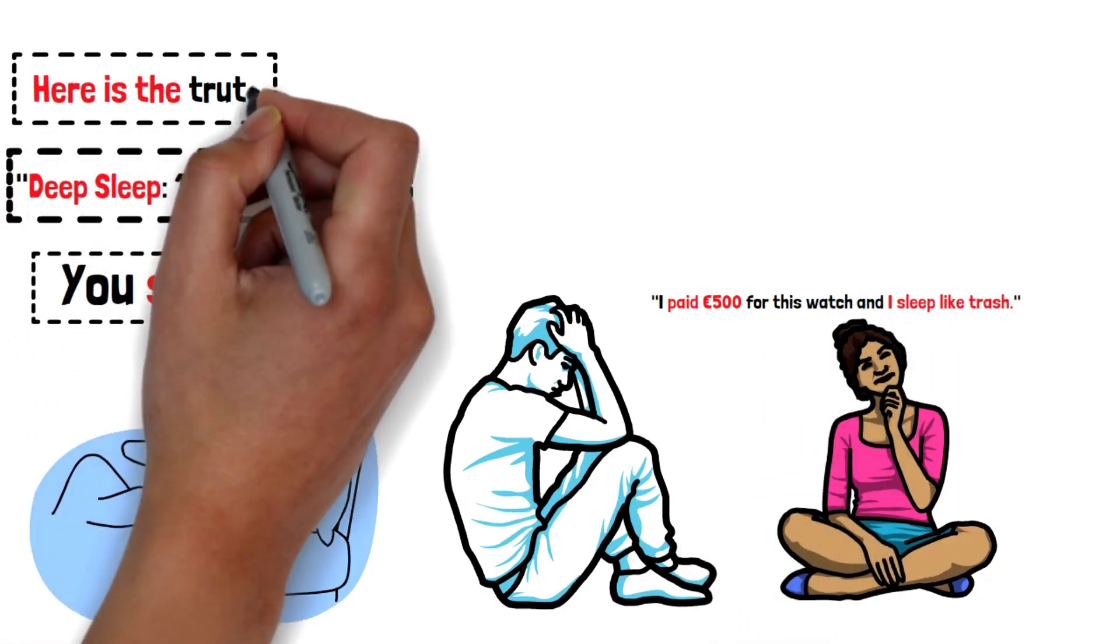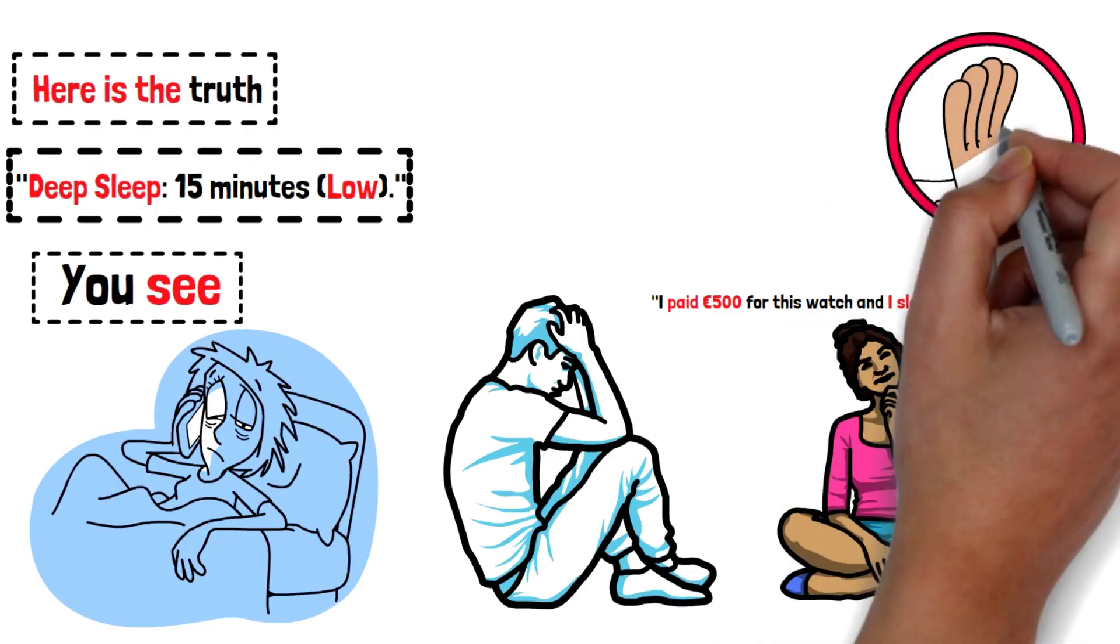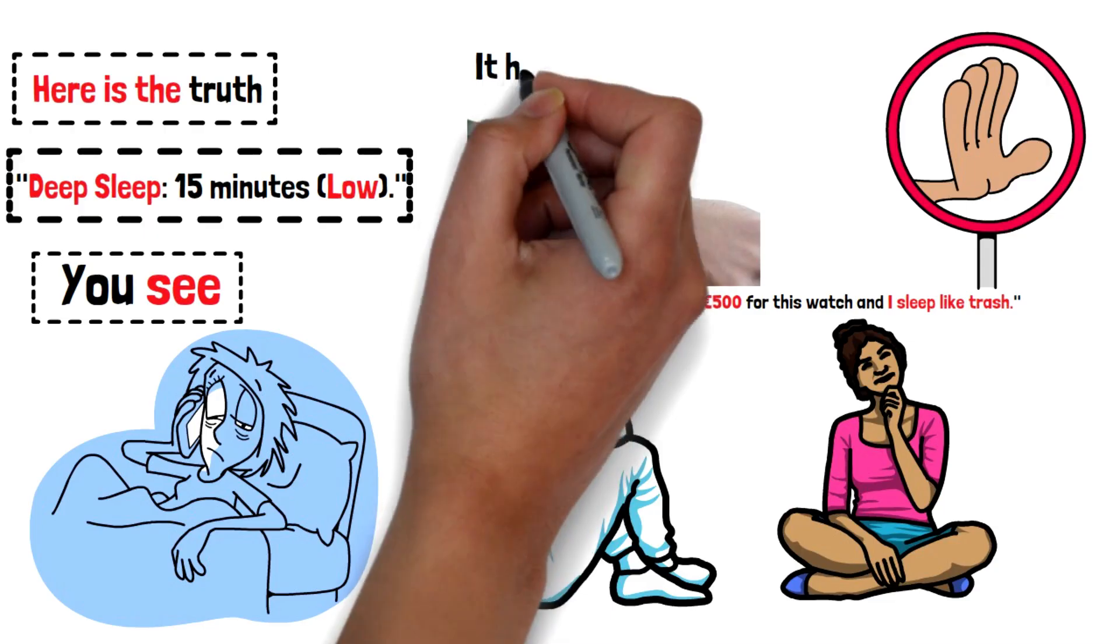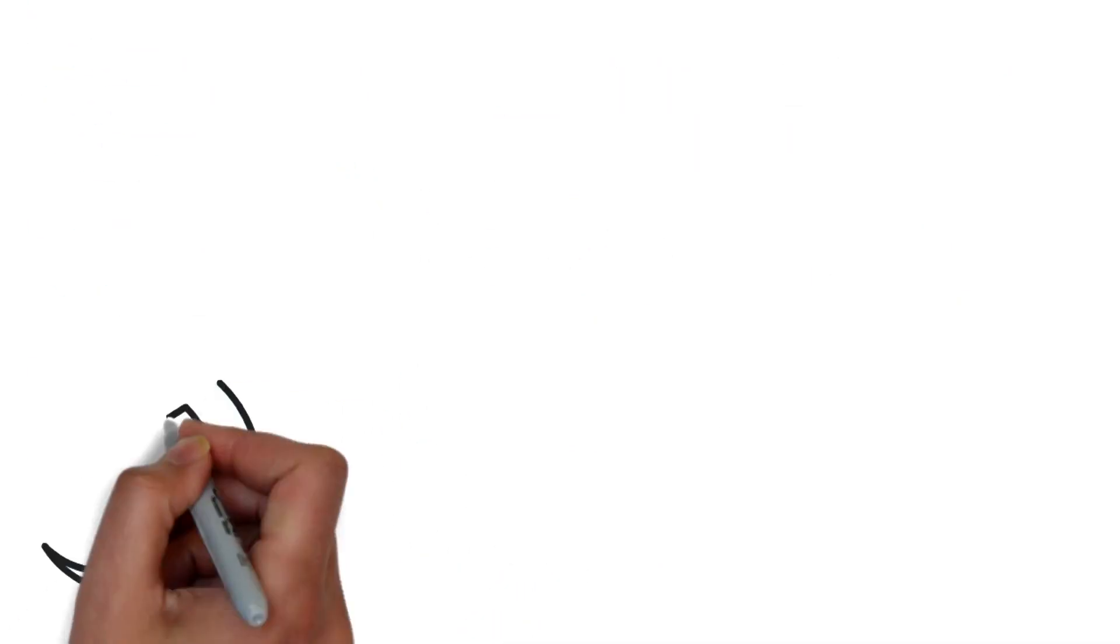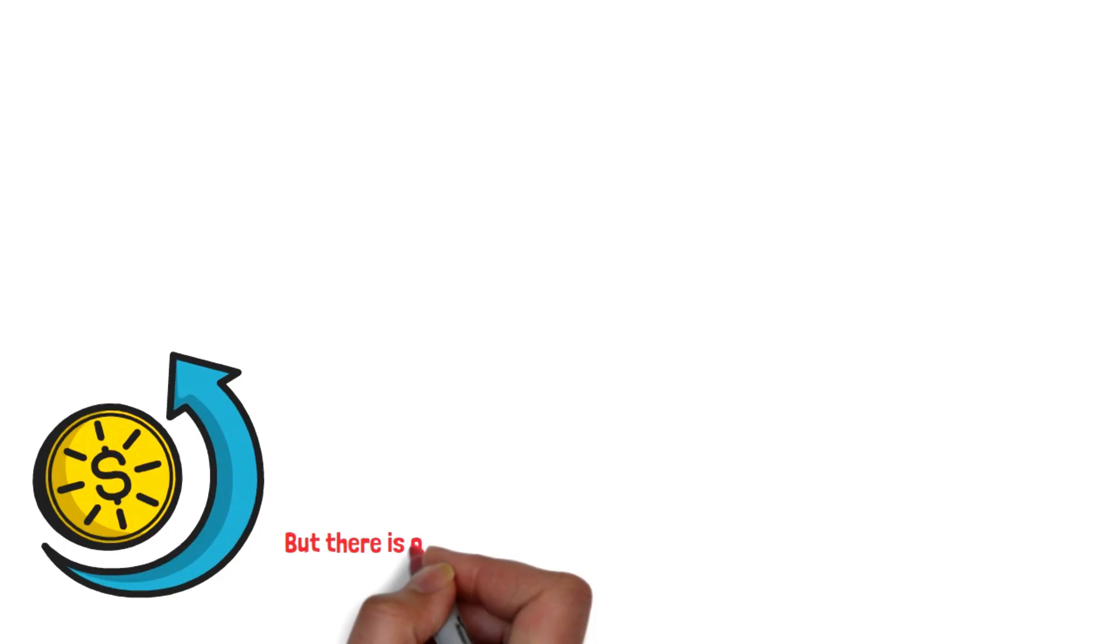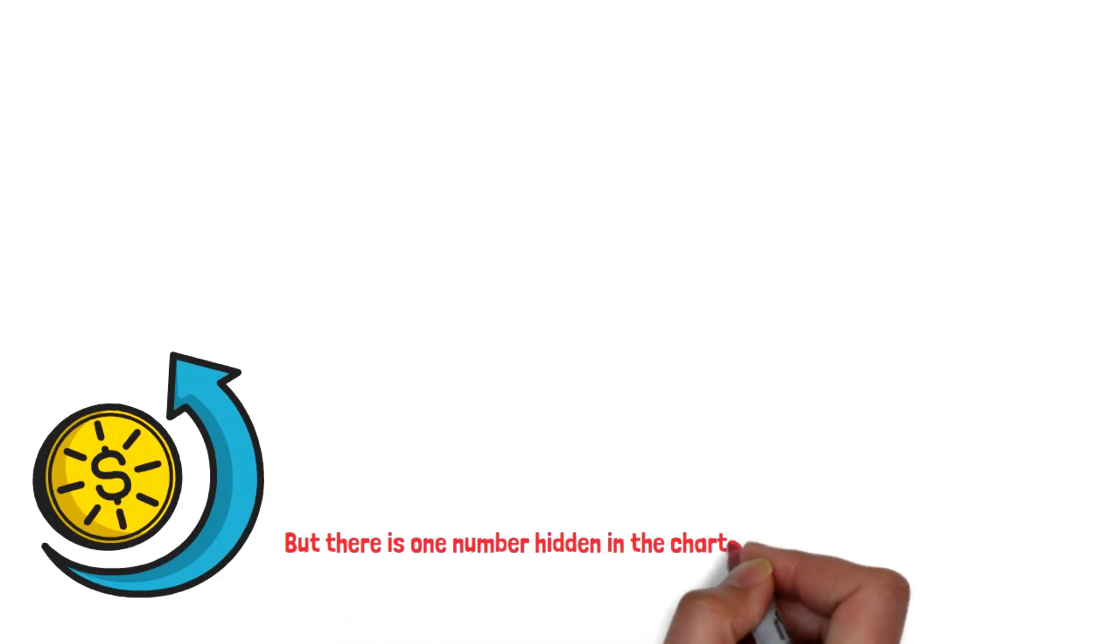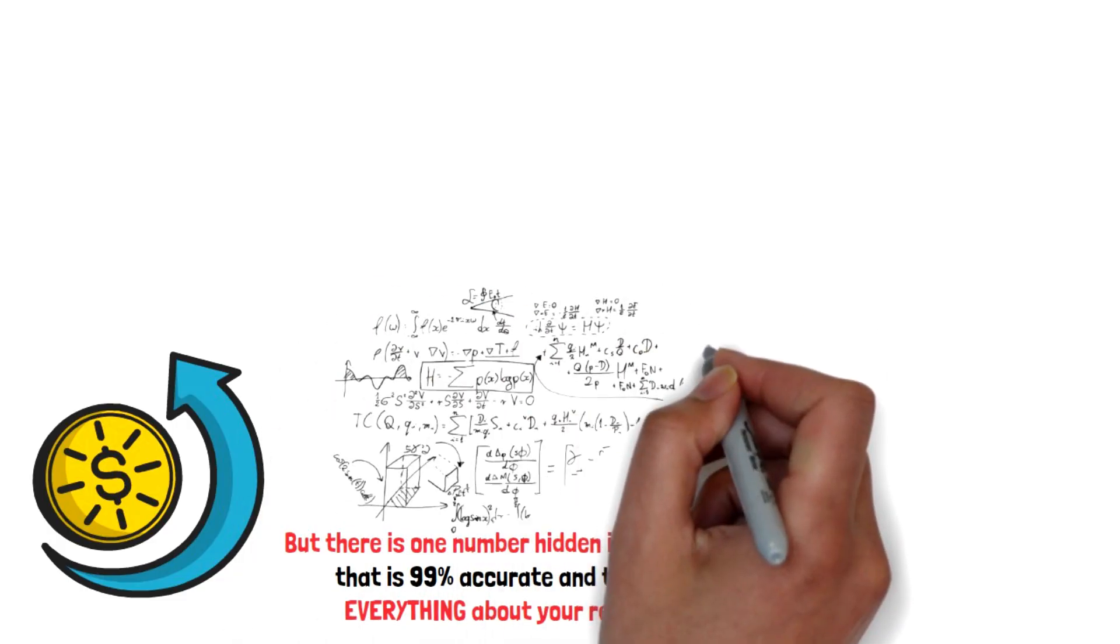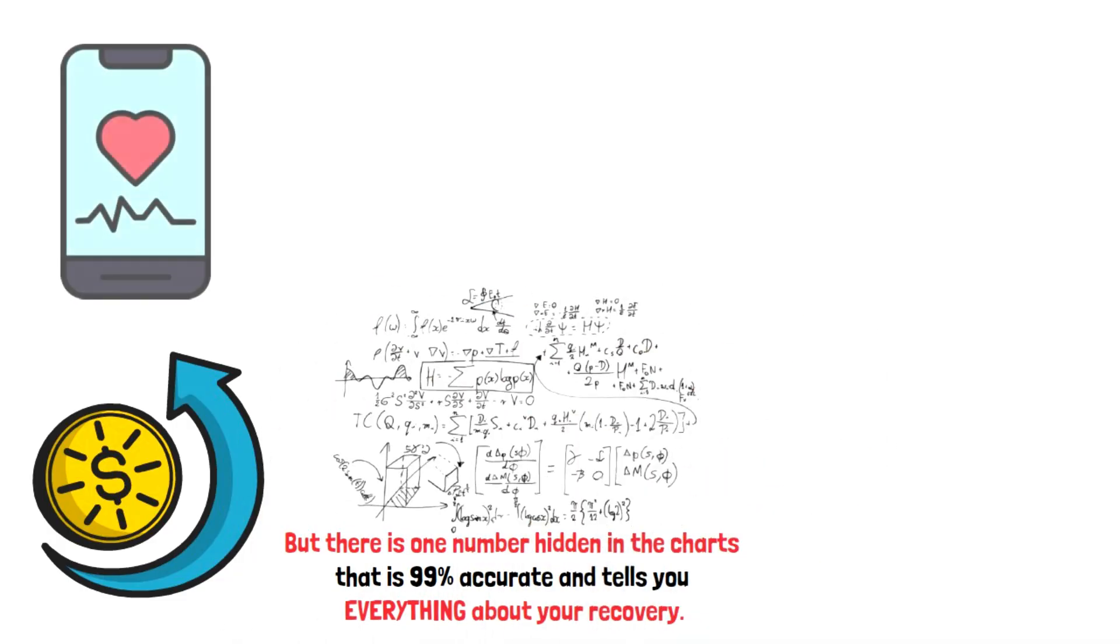Here's the truth: stop looking at the stages. Deep sleep and REM tracking on wrist wearables is a lottery. It has a 50% error rate—it's a coin flip. But there is one number hidden in the charts that is 99% accurate and tells you everything about your recovery. I call it the god metric: it's the timing of your lowest heart rate.